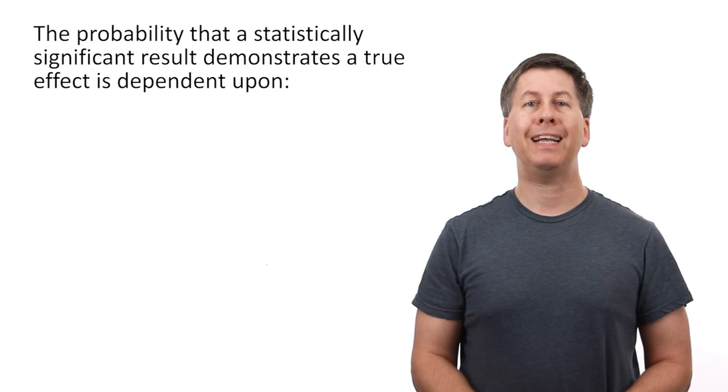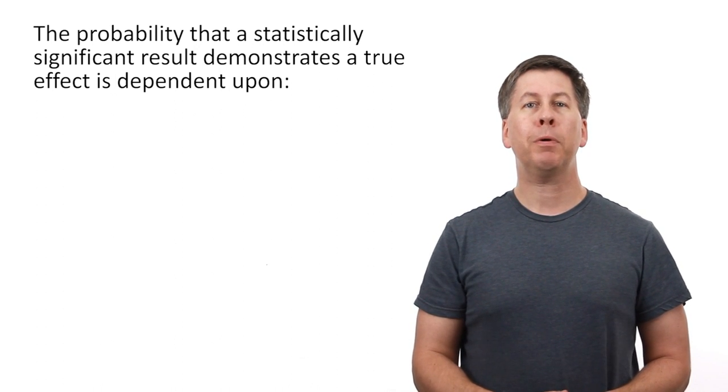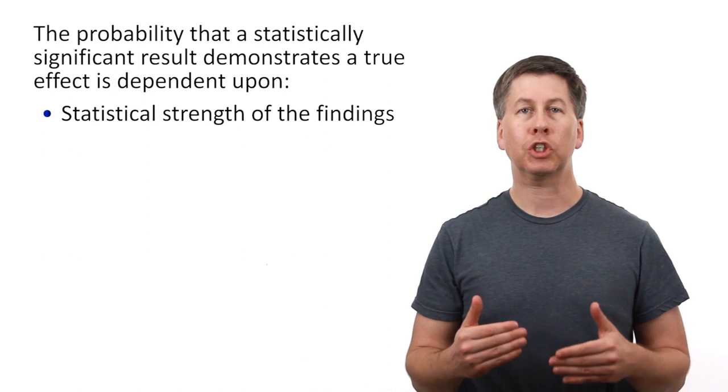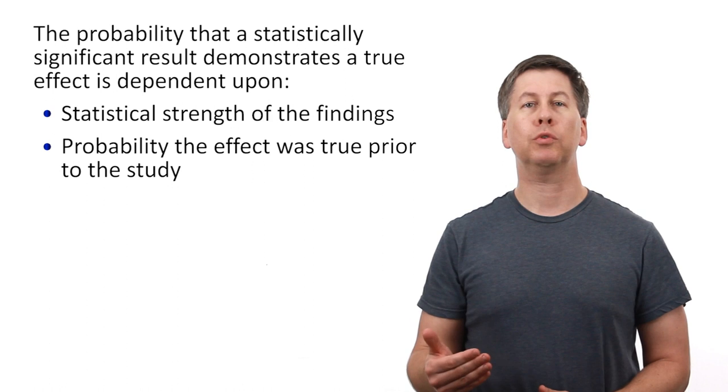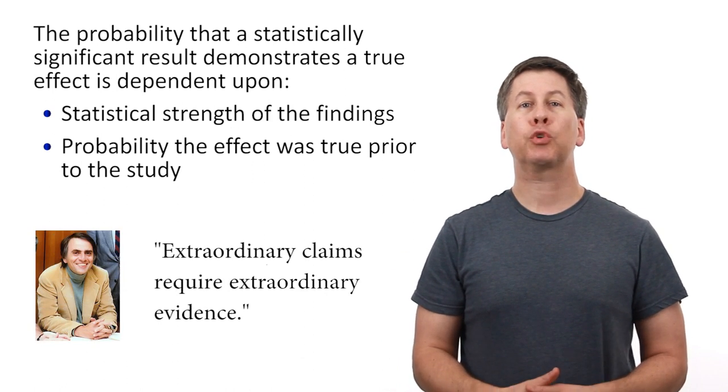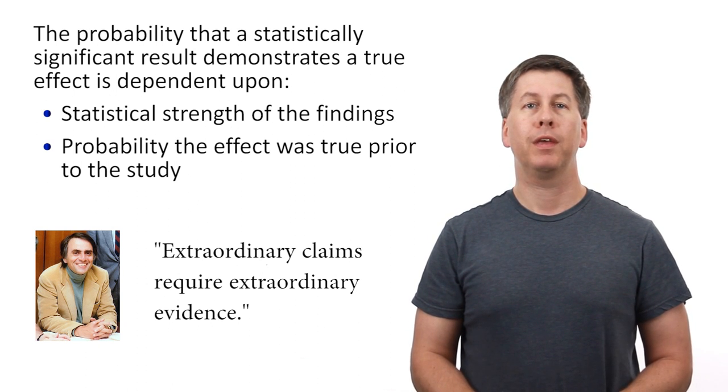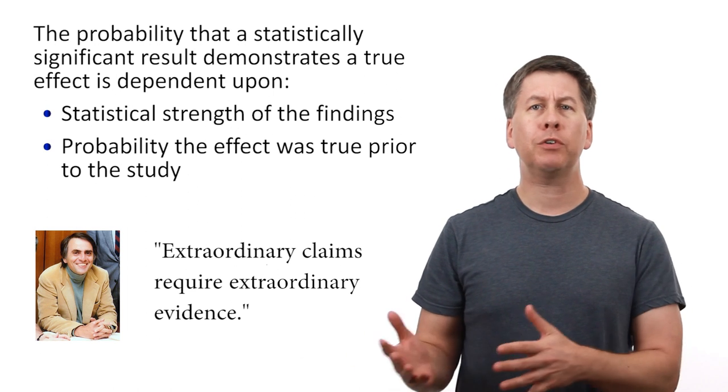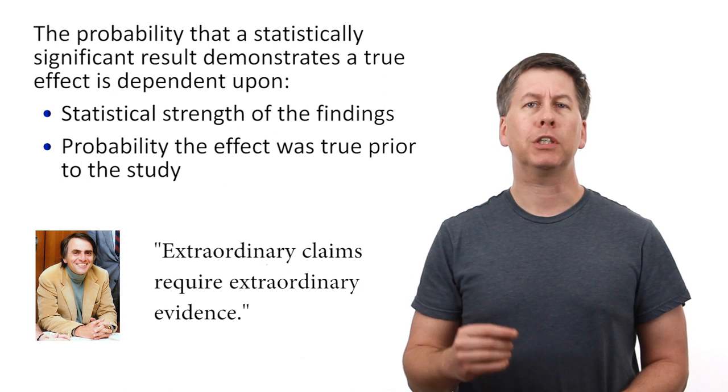The probability that a statistically significant result demonstrates a true effect is dependent upon not just the statistical strength of the findings, but also upon the probability that the effect was true prior to this study. Or in the words of Carl Sagan, extraordinary claims require extraordinary evidence. If we reduce trials to just being positive or negative on the basis of p-values, we lose our ability to apply this reasoning.